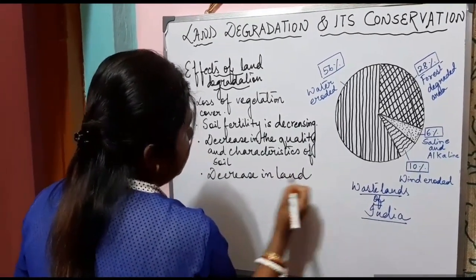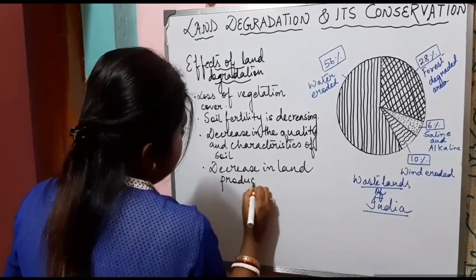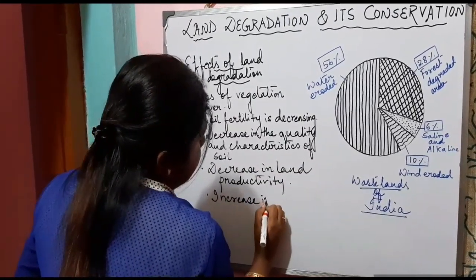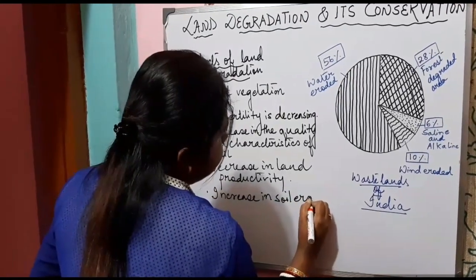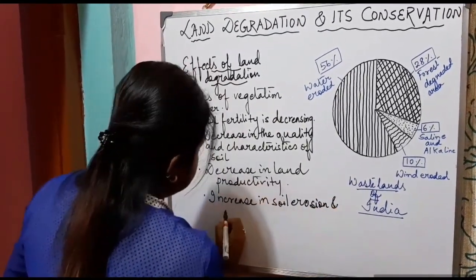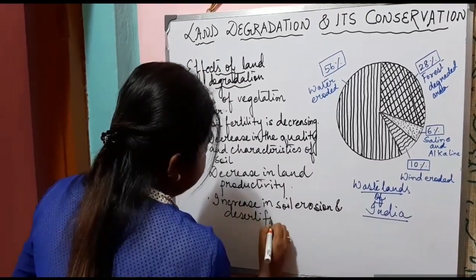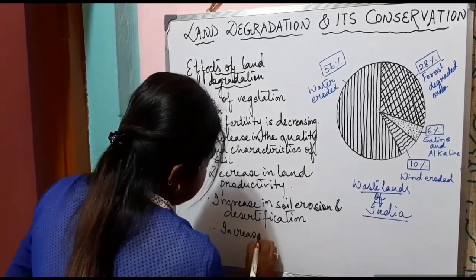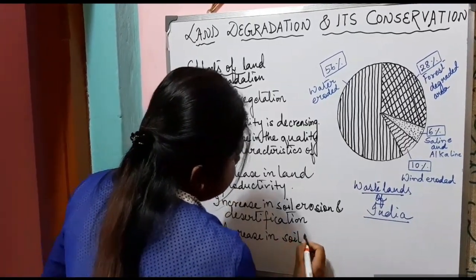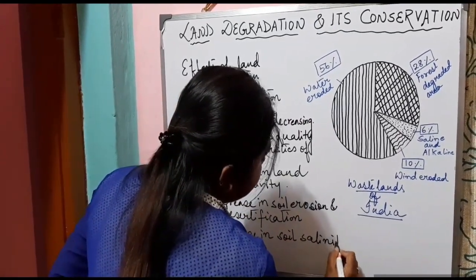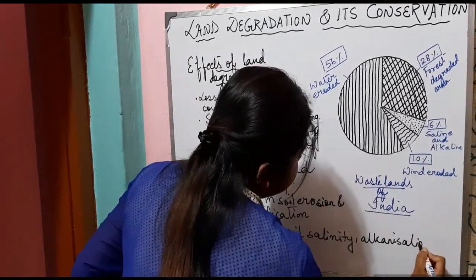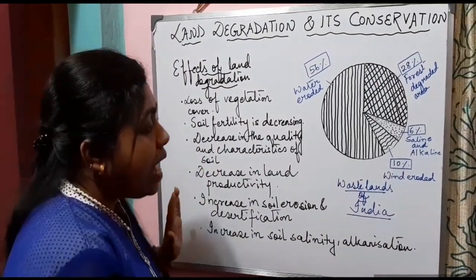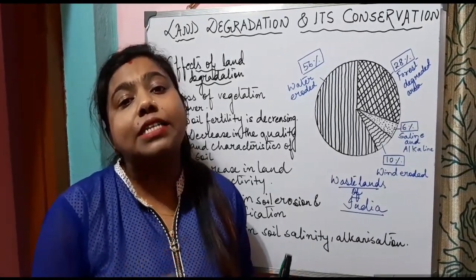The characteristics of soil get degraded. There is a decrease in land productivity, an increase in soil erosion and desertification, and an increase in soil salinity. These are the effects of land degradation.